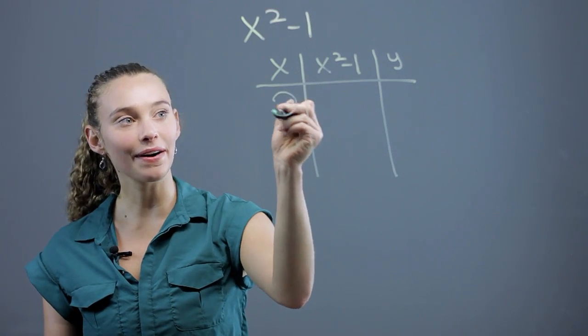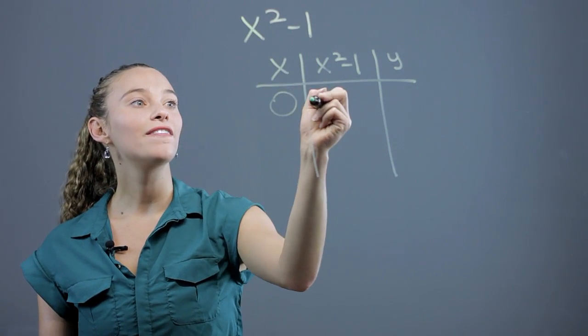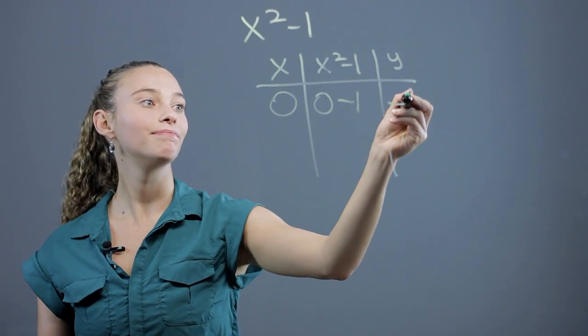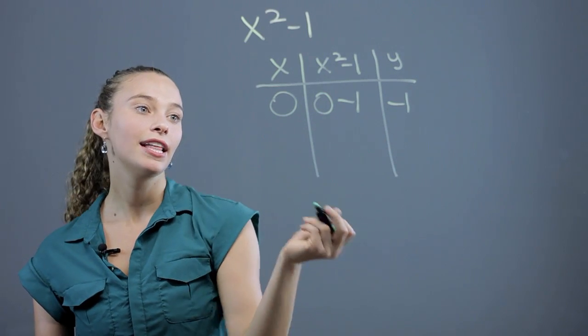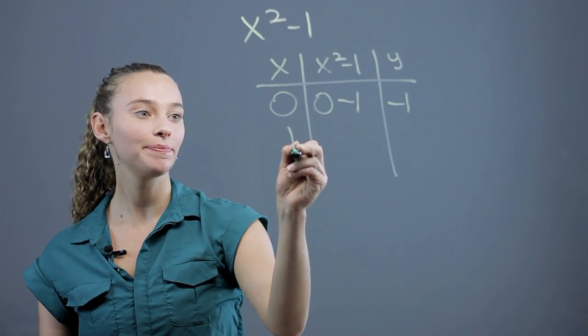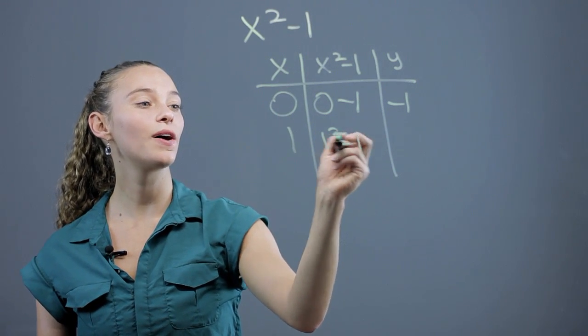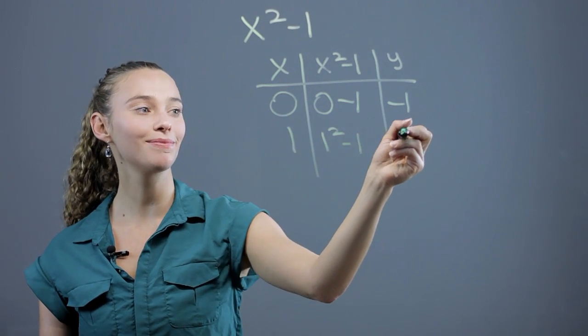Let's start with a point 0. We have 0 squared minus 1. That gives us our y. That's negative 1. Let's then start with something like 1. That's going to be 1 squared minus 1. So that's 1 minus 1 is 0.